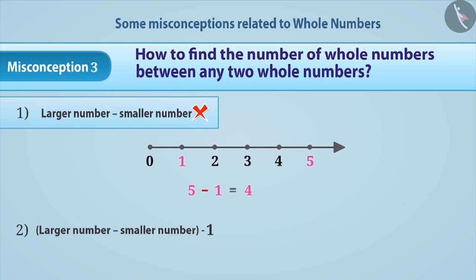To know the number of whole numbers between any two whole numbers, we must subtract the smaller number from the larger number and then we have to subtract 1 from the result. So, option 2 is the correct answer.